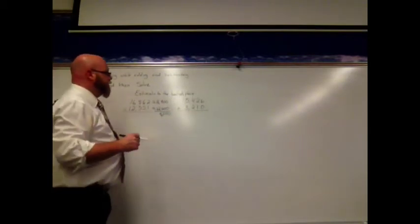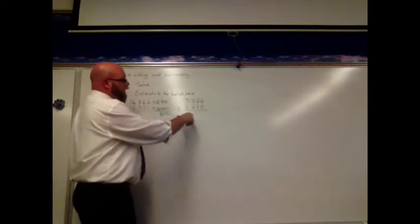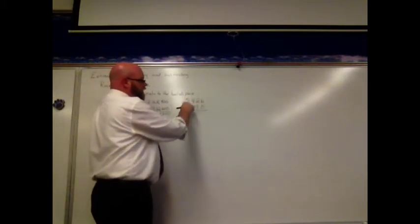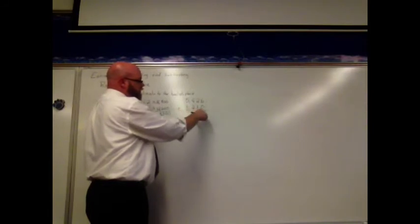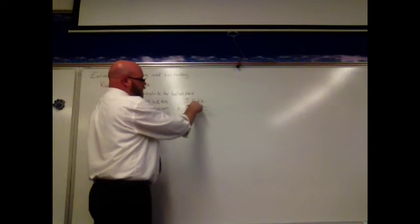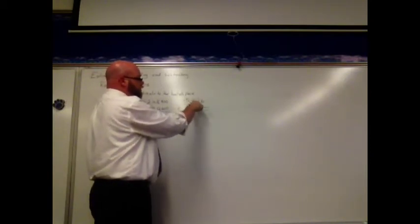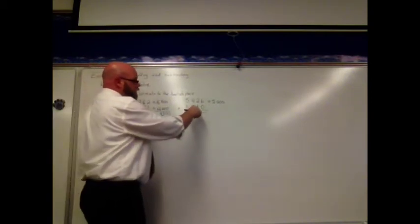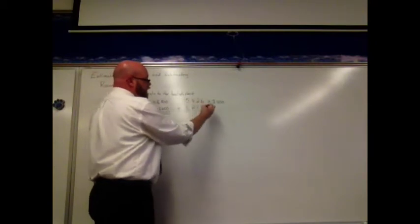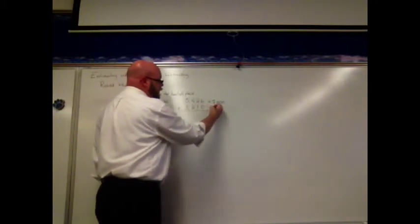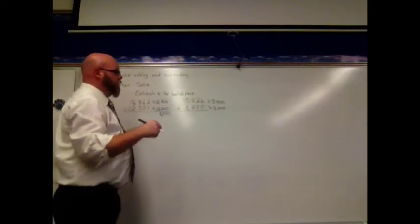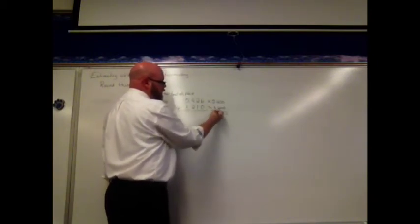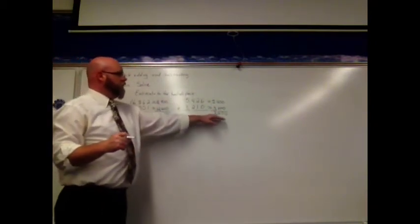This time I want to add, doing the same thing — estimating to the hundreds place. I know I'm going to look at the 2 and the 1 in the tens place to determine what to do with the 4 and the 2 in the hundreds place. So I'm looking at 5,426 plus 3,210. My rule, 5 to the sky, 4 and below let it go, tells me 5,426 is closer to 5,400 than to 5,500. And 3,210 — the 1 in the tens place tells me this is closer to 3,200 than to 3,300. Now I can just add: 0 plus 0 is 0, 0 plus 0 is 0, 4 plus 2 is 6, and 5 plus 3 is 8. So my estimated answer to the hundreds place is 8,600.